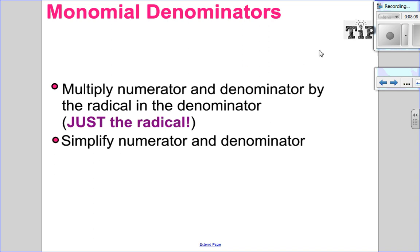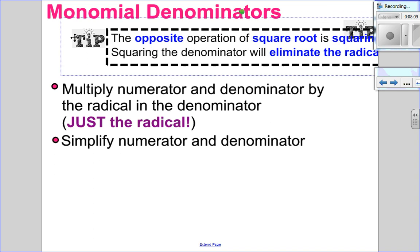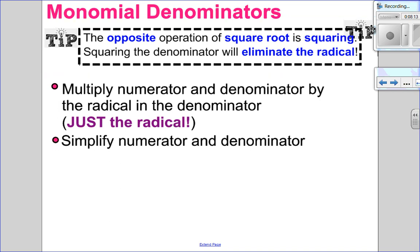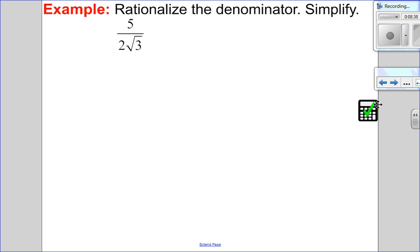For monomial denominators, to square the denominator and eliminate the radical, multiply numerator and denominator by the radical in the denominator — just the radical. If there's a number in front, don't worry about it. Then simplify numerator and denominator. So for 5 over 2 root 3 — I need to rationalize, so I multiply by root 3 top and bottom. Notice I didn't do 2 root 3 — just root 3 is easier.